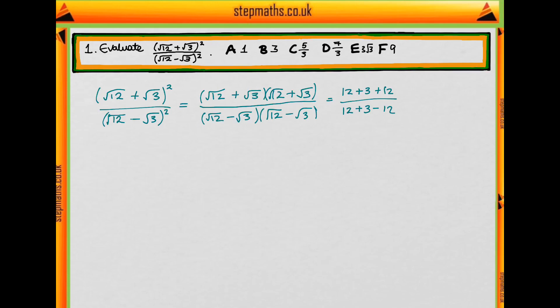Then we do root 3 times root 12. We can bring the whole thing under the square root. So we do the square root of 3 times 12, which is 36. The square root of 36 is 6, and we have that 2 times, so we get 12.